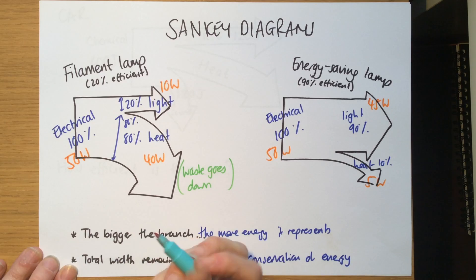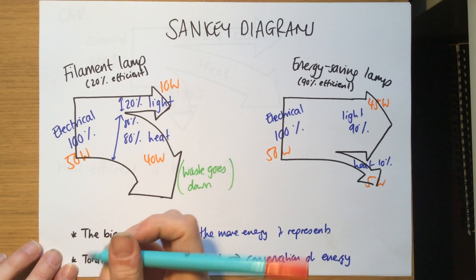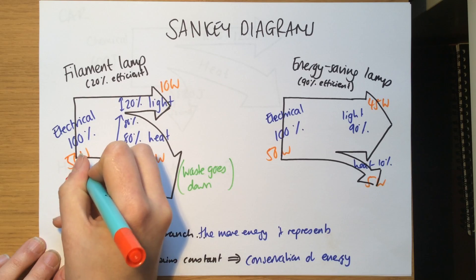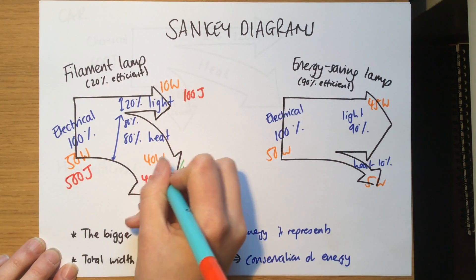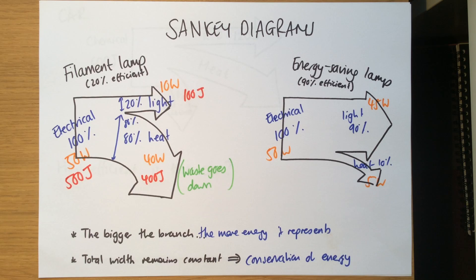We could also write it in terms of joules. Let's think about in 10 seconds, this would use 500 joules of energy, this would become 100 joules and this would become 400 joules. So you can write it in terms of percentages, watts, or joules, it doesn't matter as long as you're consistent.